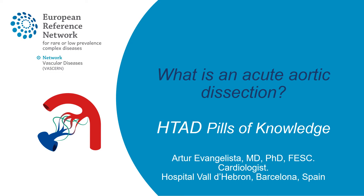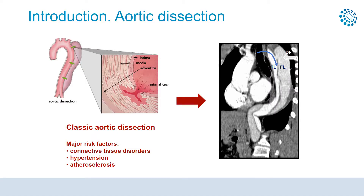Acute Aortic Syndrome is a life-threatening cardiovascular emergency in which rapid diagnosis and treatment are paramount. Aortic dissection is the most frequent entity in Acute Aortic Syndrome.